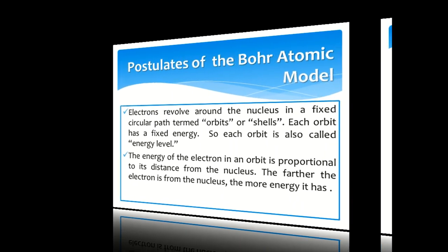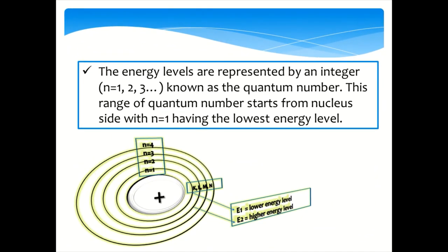The energy levels are represented by an integer n equals 1, 2, 3, known as the quantum number. This range of quantum number starts from nucleus side with n equals 1 having the lowest energy level.